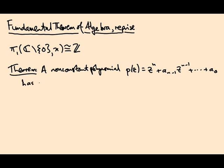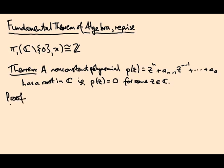has a complex root. So root in complex numbers, i.e. it vanishes somewhere. p of z equals zero for some z. And the proof, if you remember, went as follows.